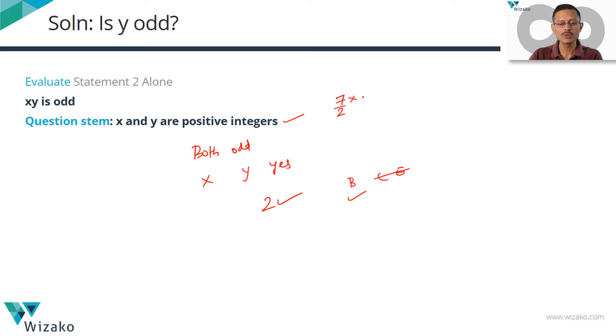But will something like this be odd? 7 by 2 into 2 by 1. These two will cancel to give us an answer which is a 7. So in this case, x is a fraction. It is not even an integer. Y is even. The product is odd.